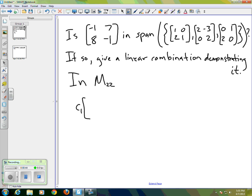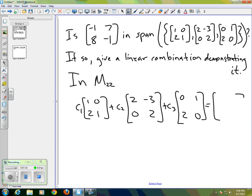is there a C1 times [1, 0; 2, 1], plus C2 times [2, -3; 0, 2], plus C3 times [0, 1; 2, 0],